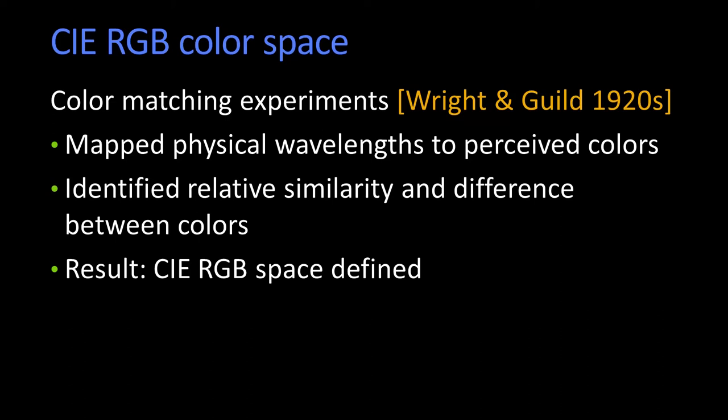Some of the first systematic experiments were done by Wright and Guild in the 1920s, although the experiments people know about are a little bit later in the 1930s.